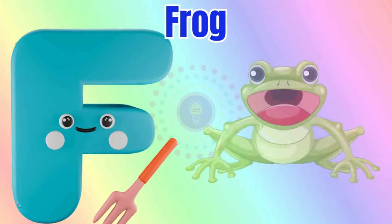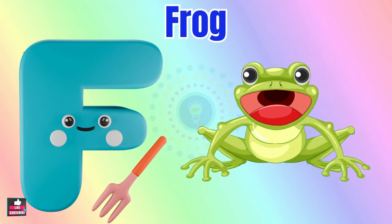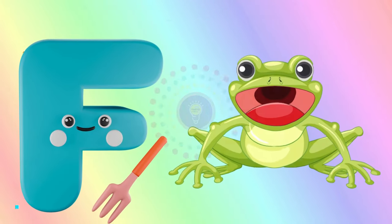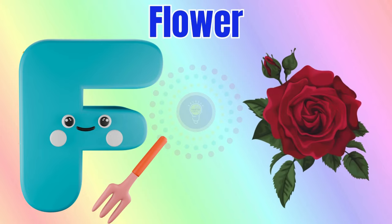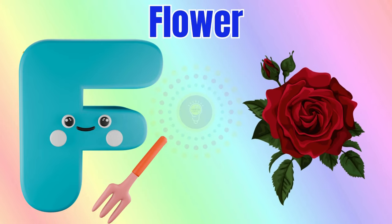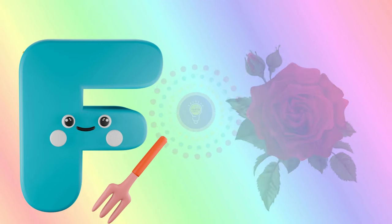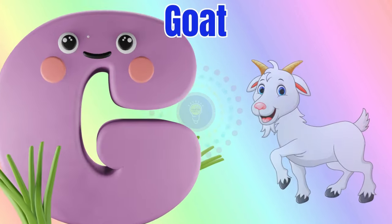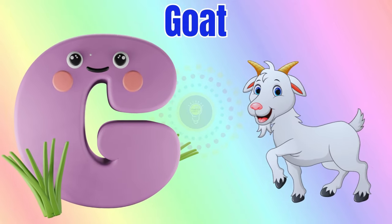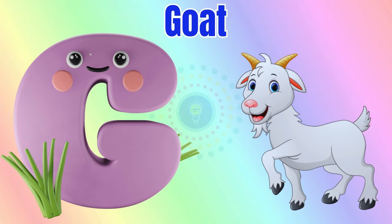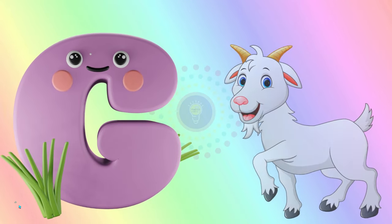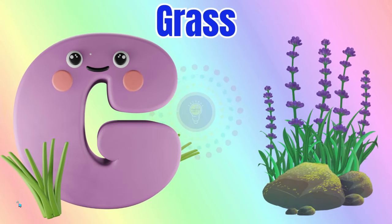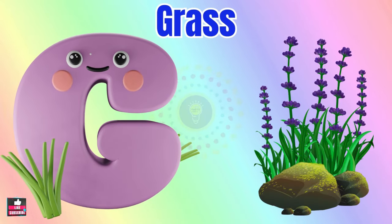F is for frog, f-f-frog. F is for flower, f-f-flower. G is for goat, g-g-goat. G is for grass, g-g-grass.